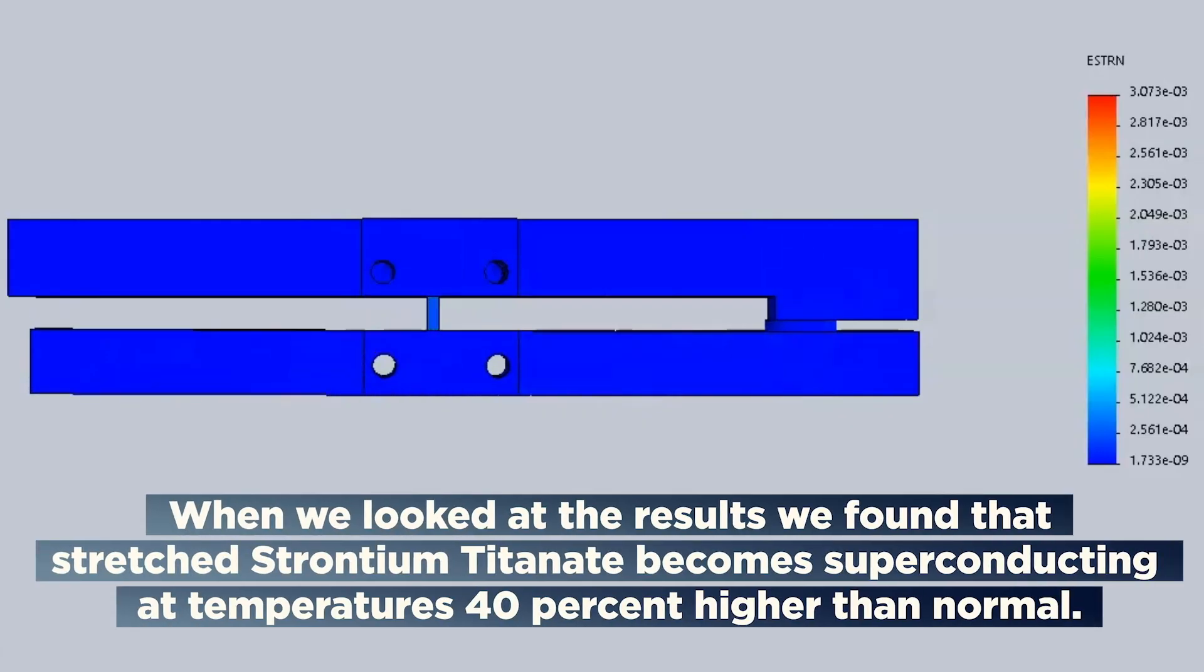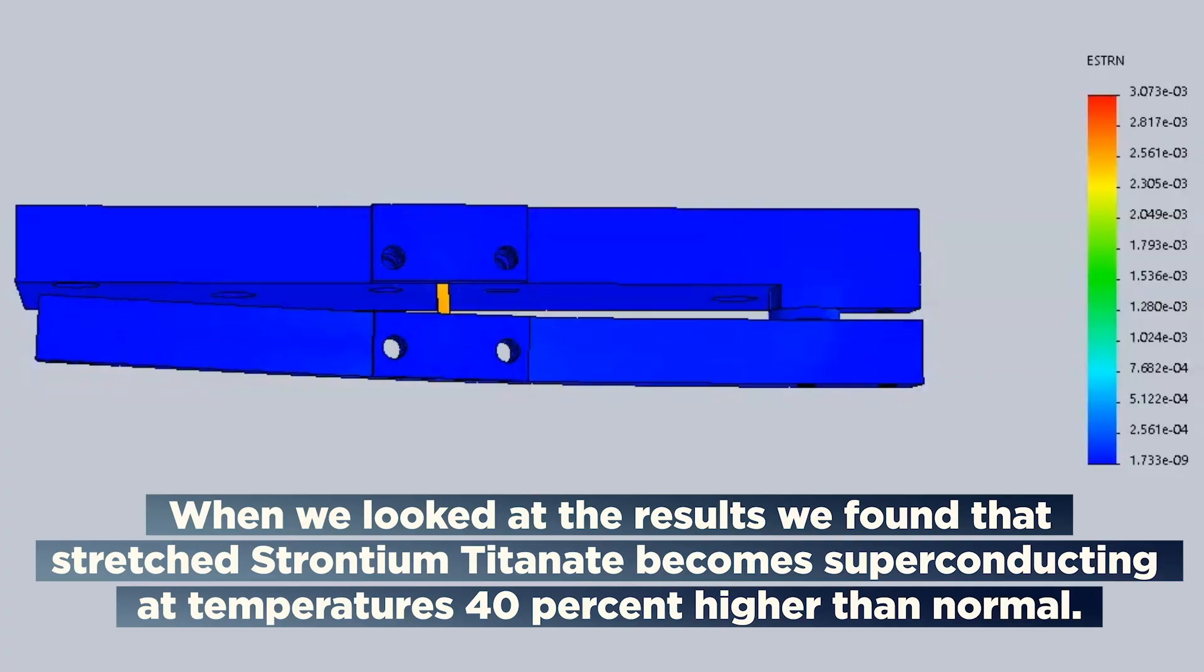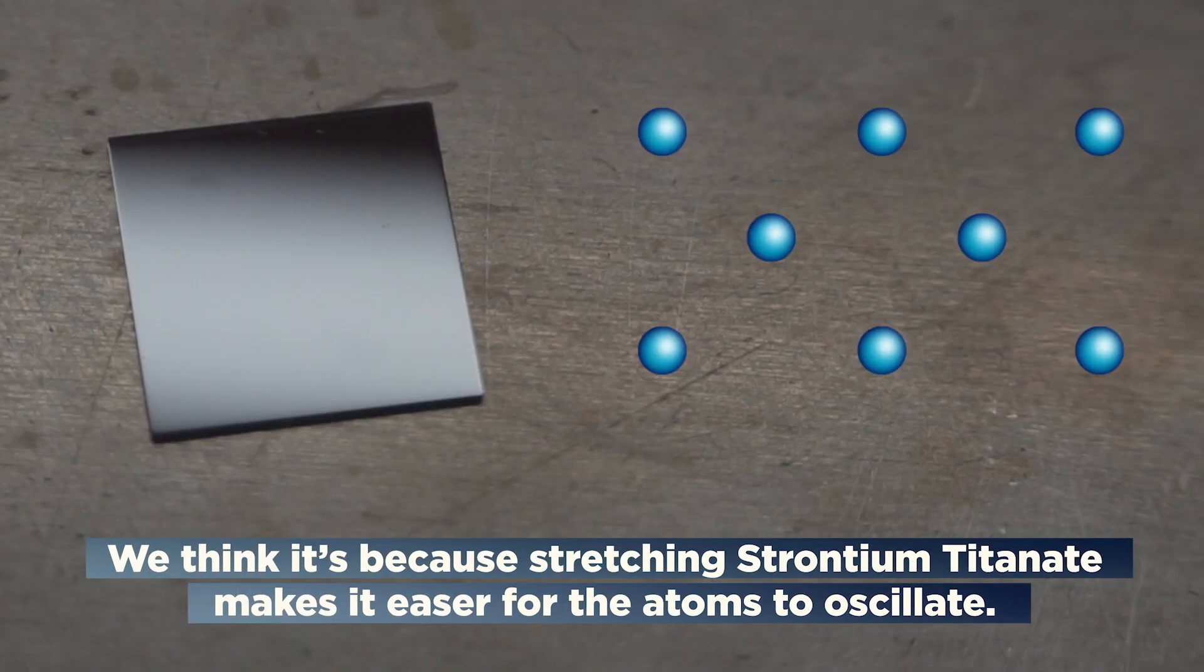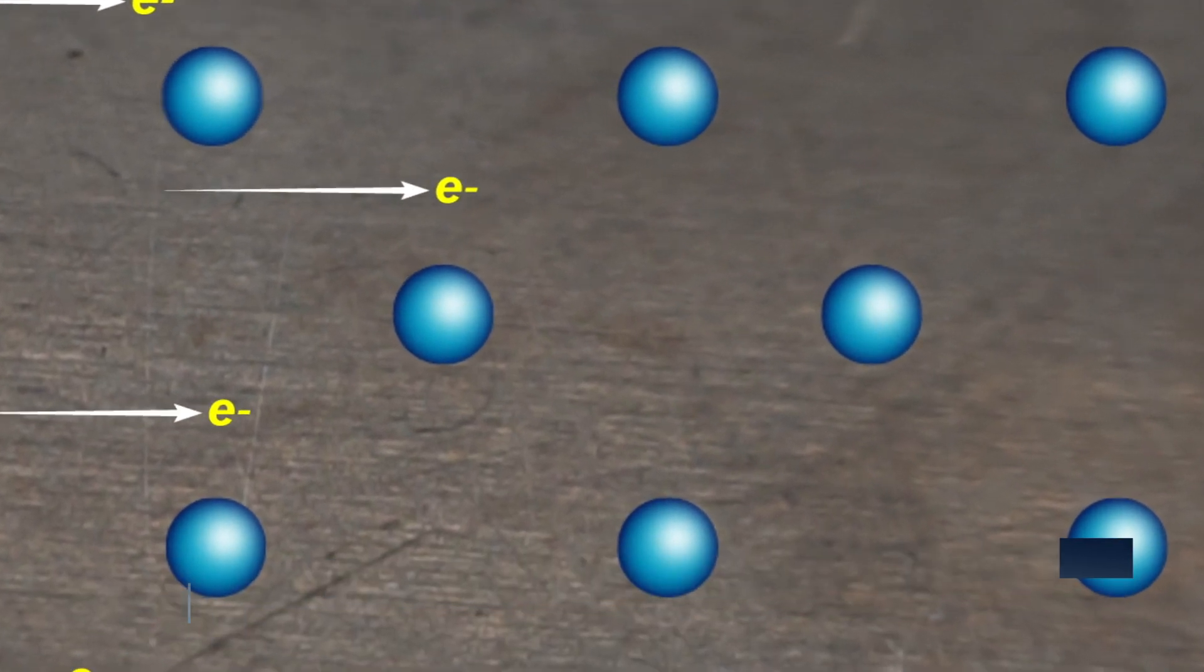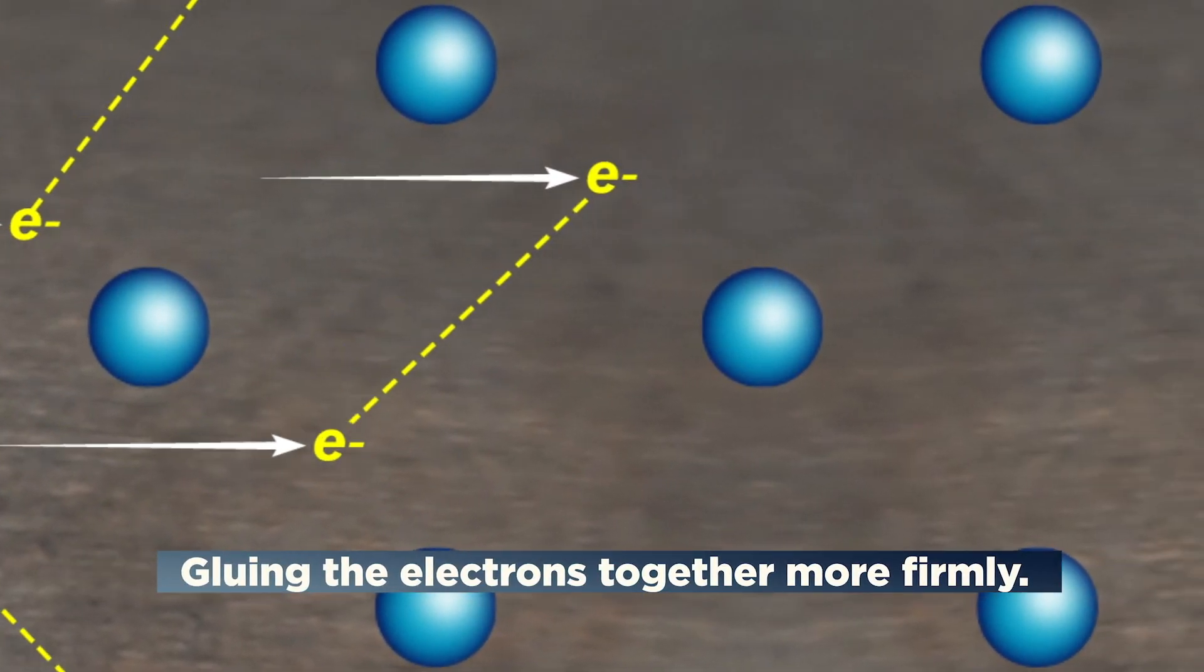When we looked at the results, we found that stretched strontium titanate becomes superconducting at temperatures 40% higher than normal. We think it's because stretching strontium titanate makes it easier for the atoms to oscillate, gluing the electrons together more firmly.